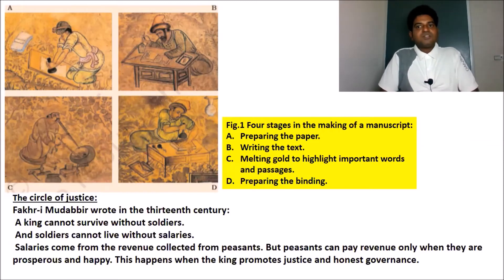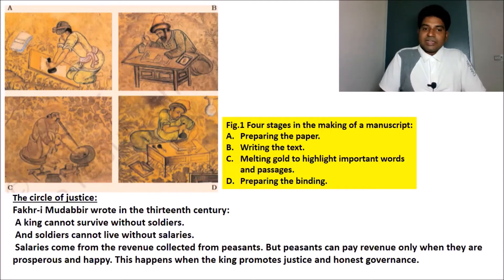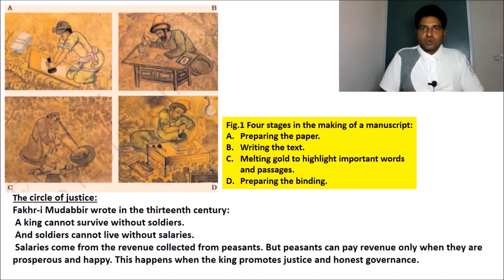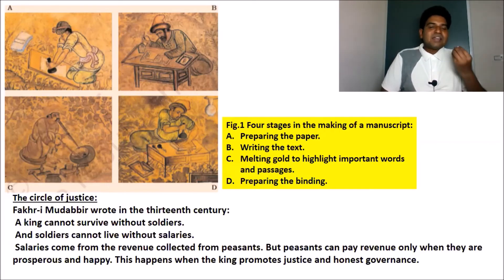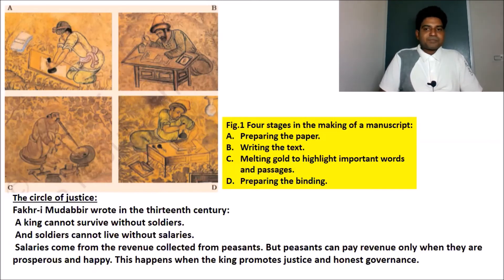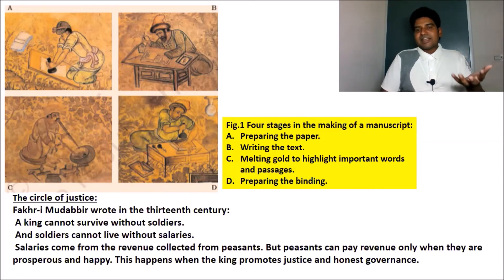There is one famous writing called the 'Circle of Justice,' written by Fakir Mudabbir in the 13th century. It states that a king cannot survive without soldiers — we need soldiers to safeguard the king and kingdom. Soldiers cannot live without salaries. Salaries come from the revenue collected from peasants. The taxes paid by peasants and artisans are paid as salaries to the soldiers. But peasants can only pay revenue when they are prosperous and happy, which happens when the king promotes justice and honest governance.